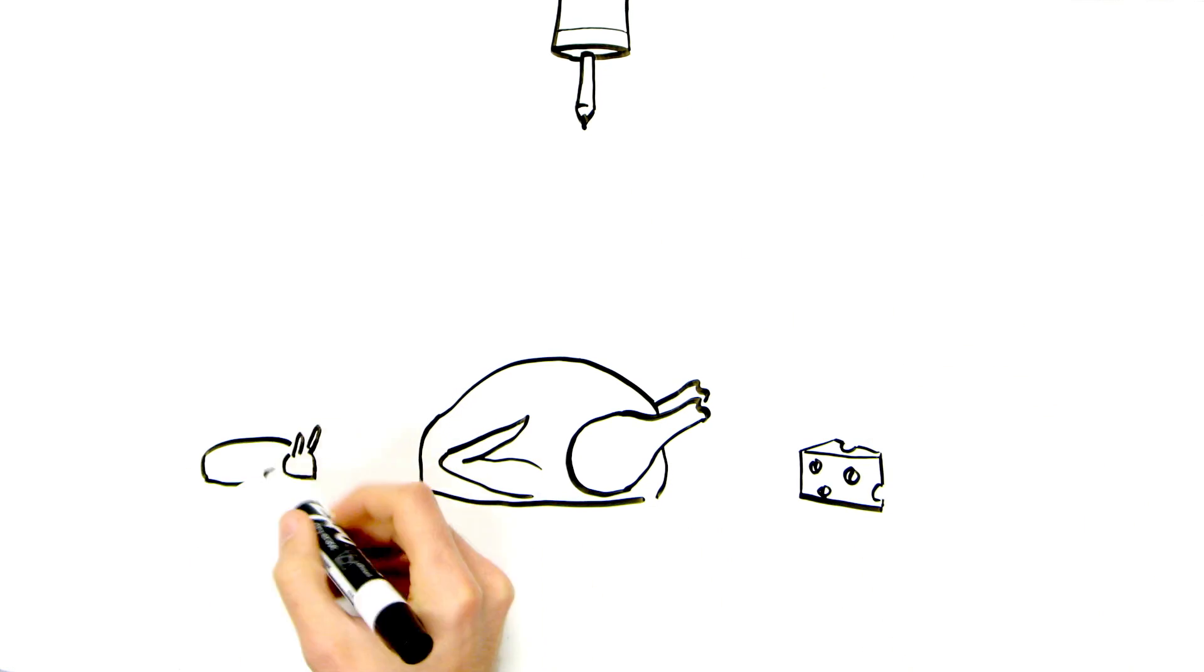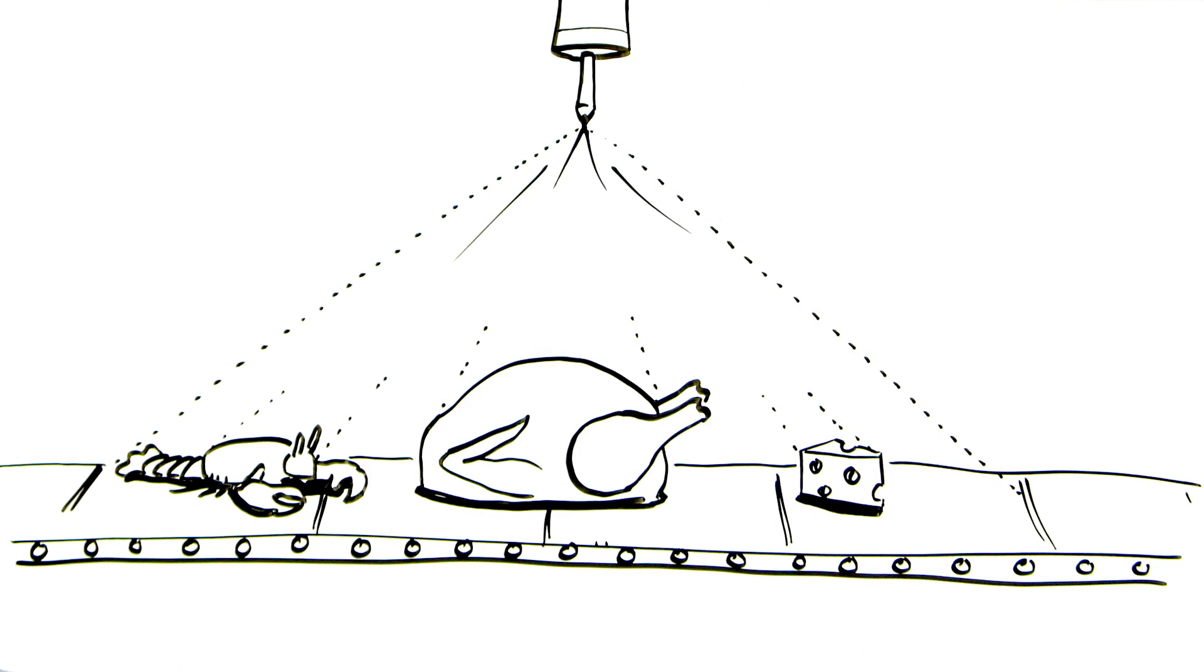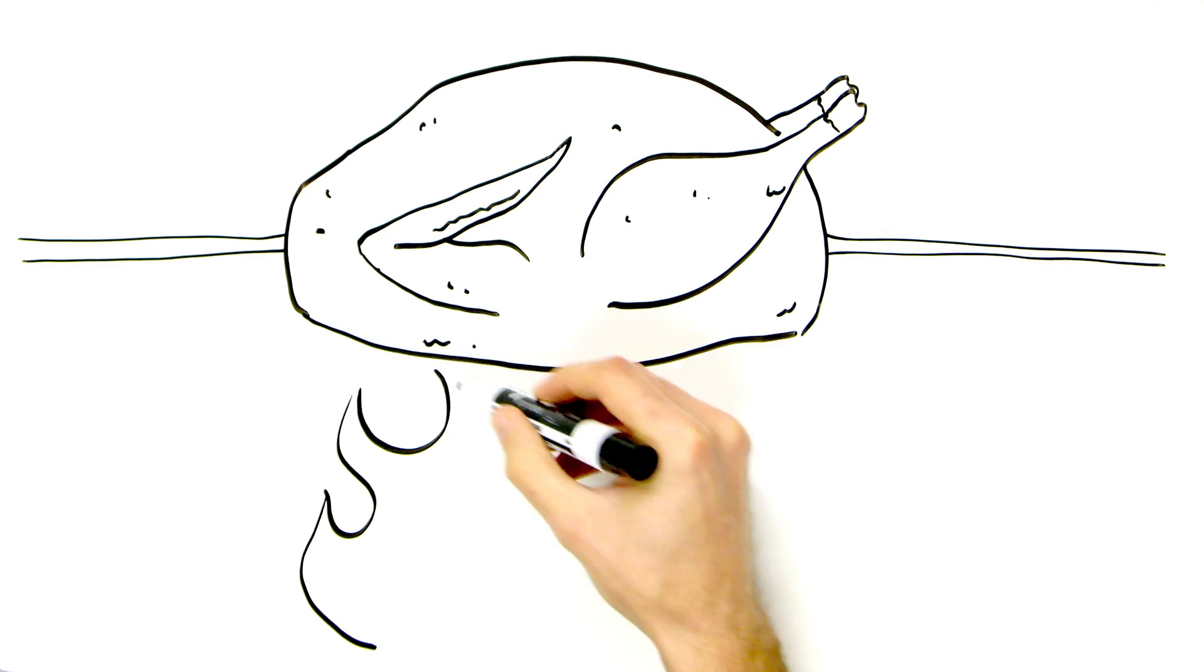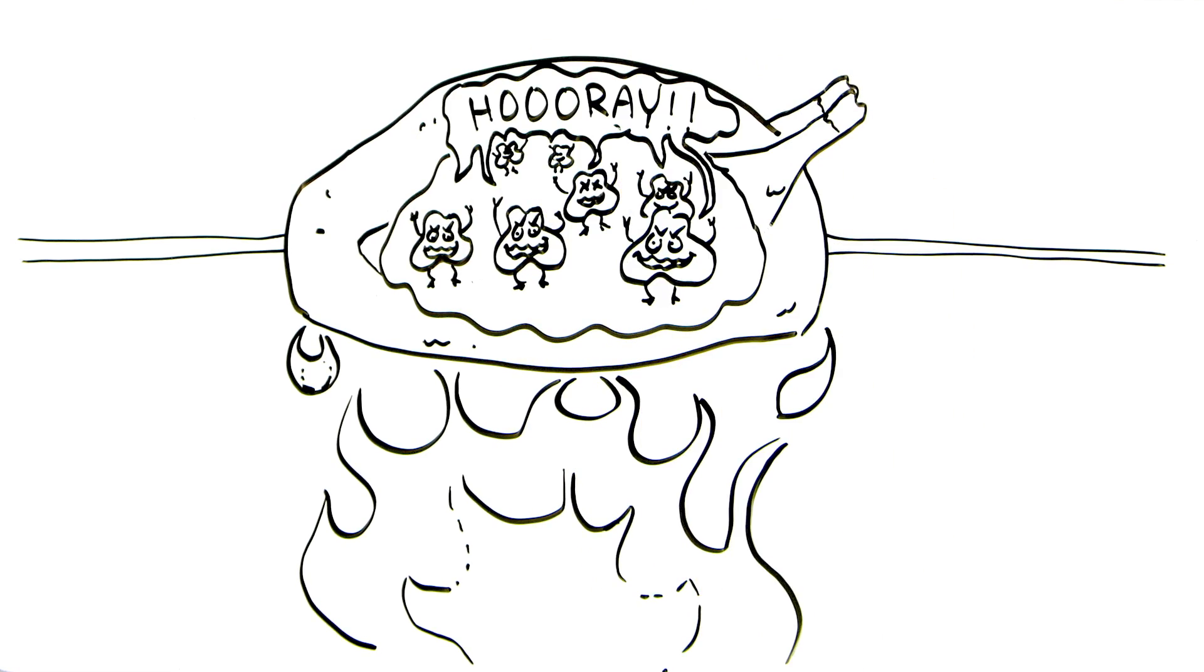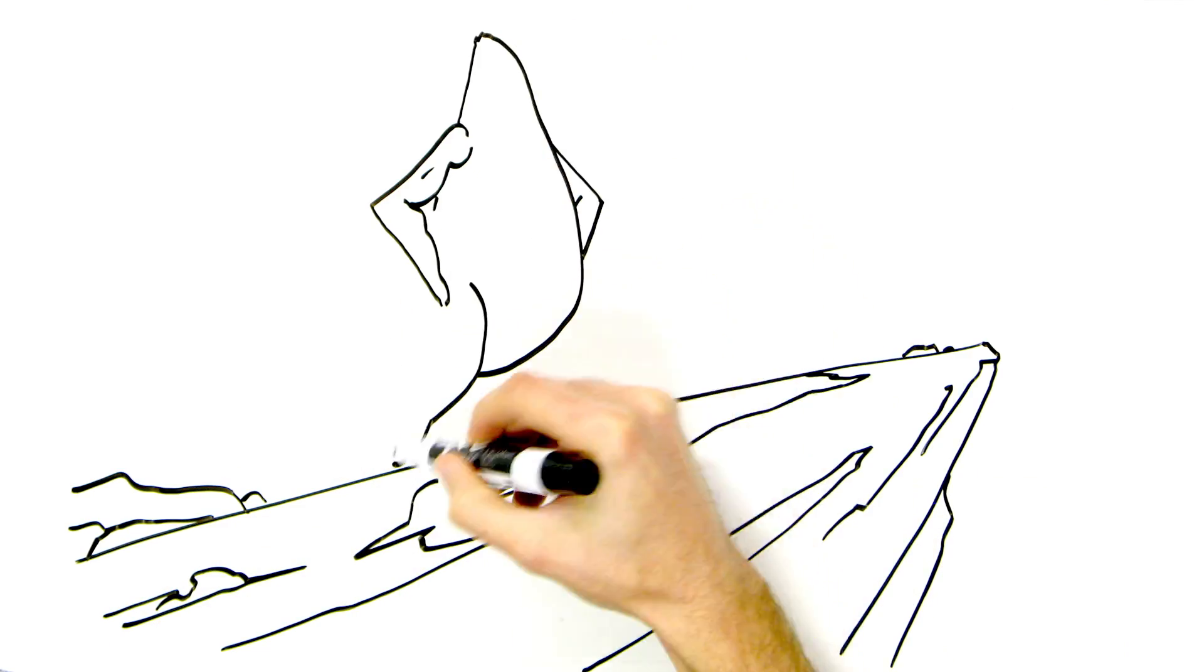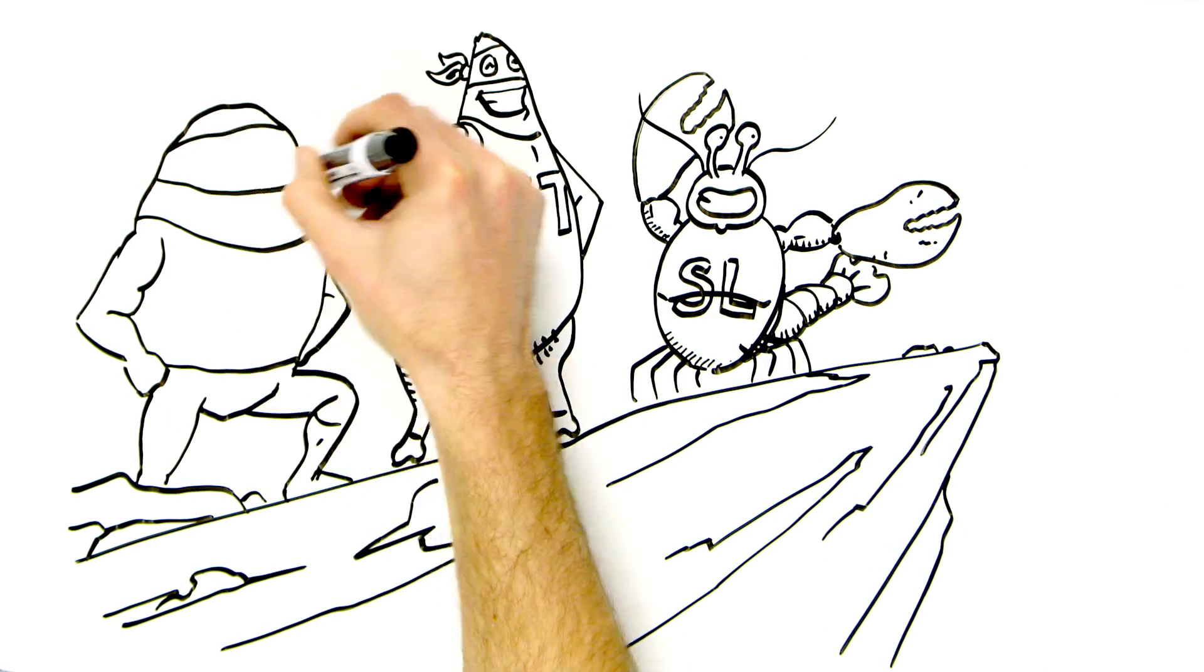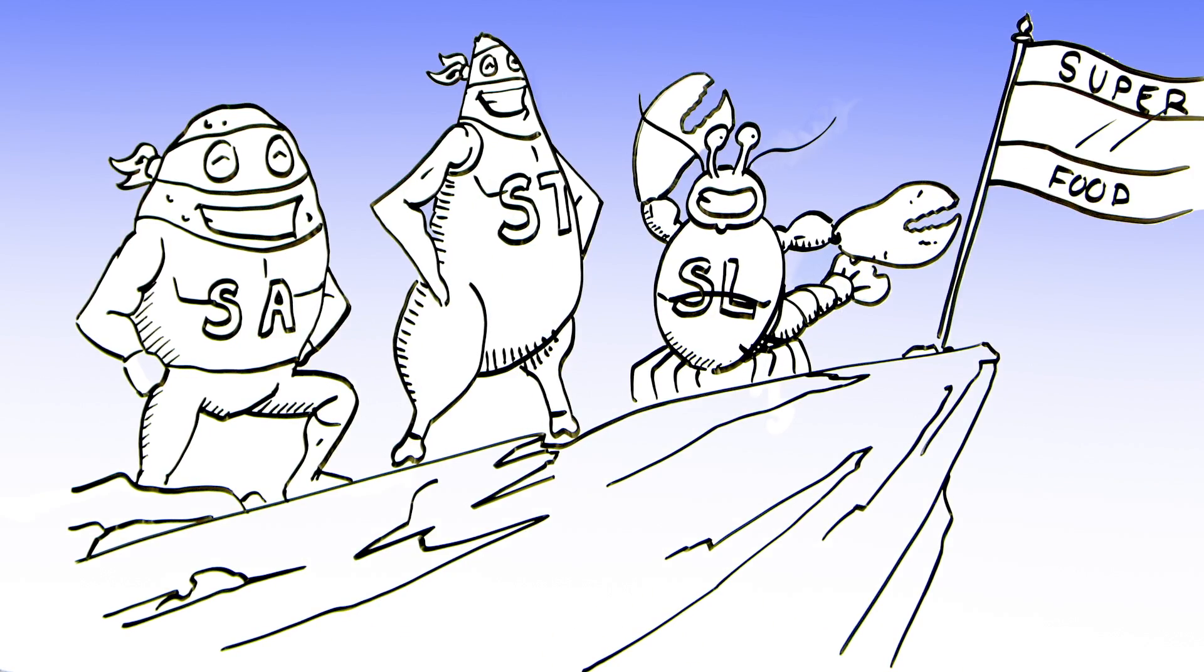While chemical processing treats primarily the outside of the item, and heating tends to overheat the outside in order to reach the desired internal temperature, Hyperbaric HPP is applied uniformly throughout the product with the product already in the package.